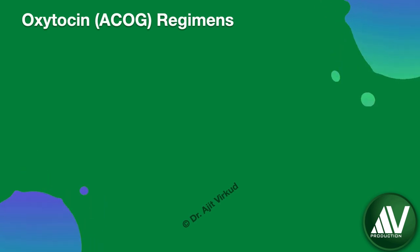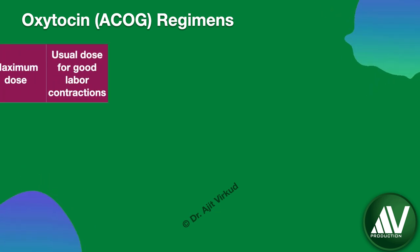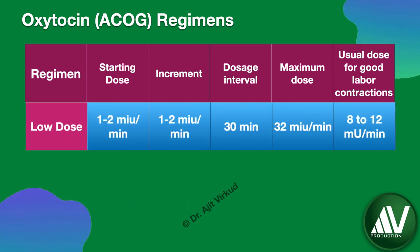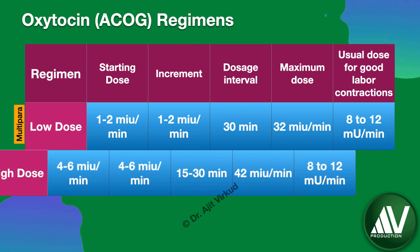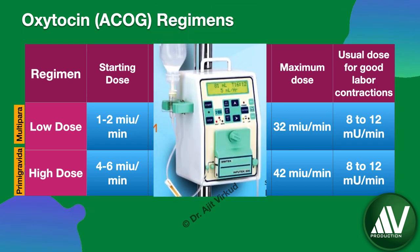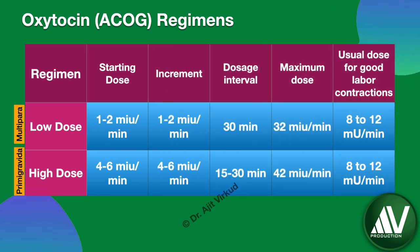I will now discuss oxytocin dosage regimens for labor induction using an infusion pump. This table shows two different dosage regimens recommended by ACOG. A low-dose regimen is recommended for multipara and the high-dose regimen for primipara. The accuracy and control of infusion can be greatly improved by an infusion pump — for example, Cardiff's infusion system. The dose can be increased from 1 mU to 32 mU per minute, doubled every 12.5 minutes.